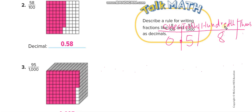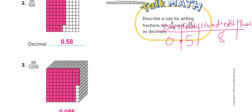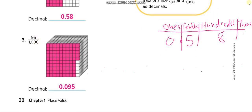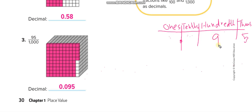Similarly, here: ninety-five over one thousand. The last digit 5 goes in the thousandths place, 9 goes before it, and we fill with zeros — so zero point zero nine five. How do we read it? Just read 95 and the place value of the last digit, which is thousandths — ninety-five thousandths.